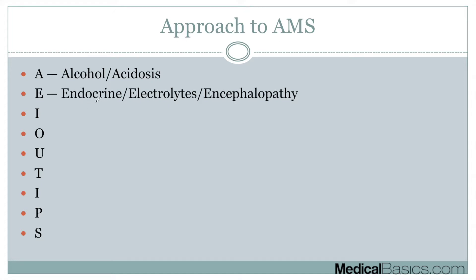E can stand for several things: endocrine, electrolytes, and encephalopathy. For endocrine, there can be many causes — any type of thyroid disorder, issues with cortisol, but diabetic ketoacidosis is probably the most commonly referenced. For electrolytes, most commonly we're dealing with sodium — hyponatremia or hypernatremia — both of which can cause altered mental status. Encephalopathy can be due to a wide variety of things, including infection — whether that's an abscess, viral encephalopathy affecting the brain directly, or systemic infections causing sepsis.